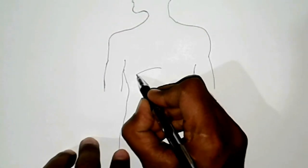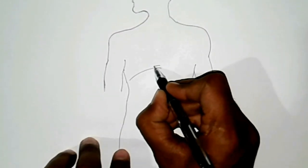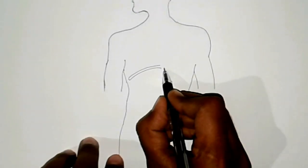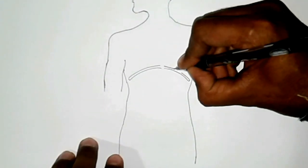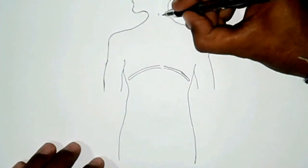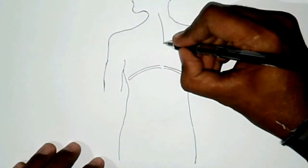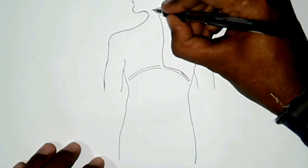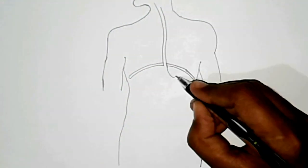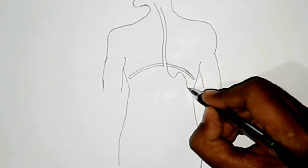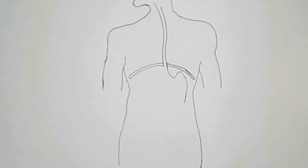Now I will draw here an arch which is called diaphragm. Here I will draw a tube, it is called esophagus, and it is stomach where chewed food got stored first.